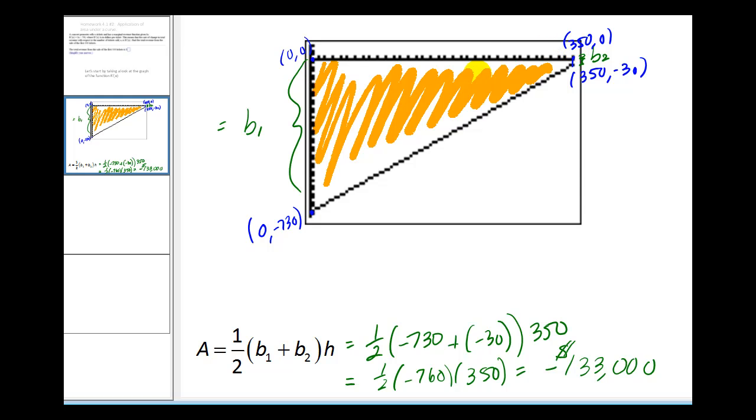So I wanted to show this example because this is the first one we've seen where the function is below the x-axis, which will result in an area being negative, which just means that in this case we have a total loss in revenue. I hope you found this explanation helpful. Thank you.